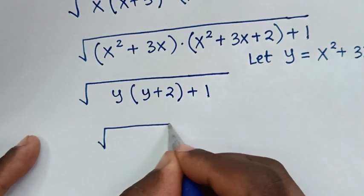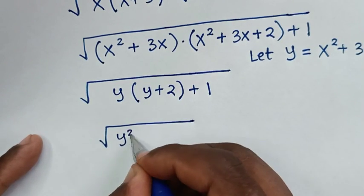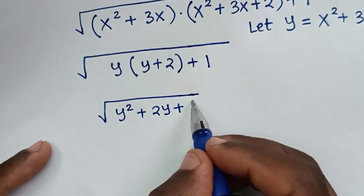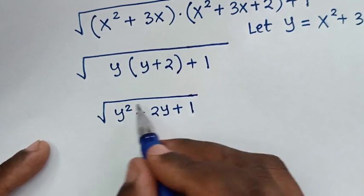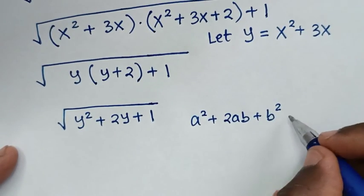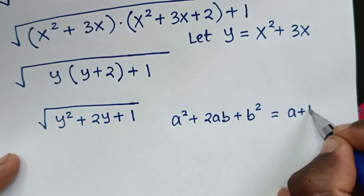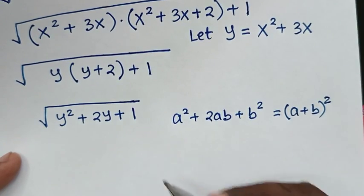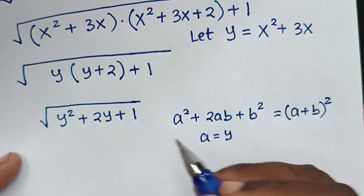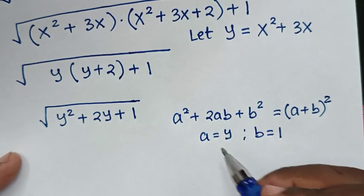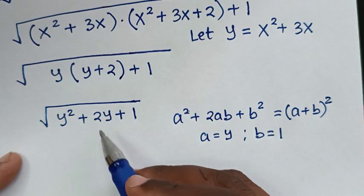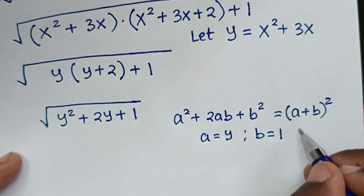This gives us the square root of y² plus 2y plus 1. Now this expression under the square root is in the form a² plus 2ab plus b², which equals (a plus b)². Comparing: a² with y² gives a equals y, and b² with 1 gives b equals 1, and 2ab equals 2y, which checks out.